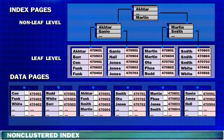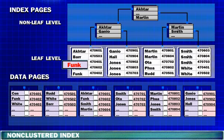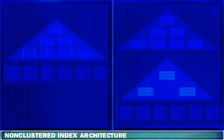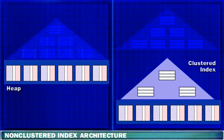Now let's take a look at non-clustered indexes. Non-clustered indexes have the same B-tree structure as clustered indexes with one significant difference. The leaf level of a non-clustered index contains key values, not the actual data. These key values map to pointers or clustering keys that locate rows in the data pages. The implementation of a non-clustered index depends on whether the data pages of a table are managed as a heap or as a clustered index.